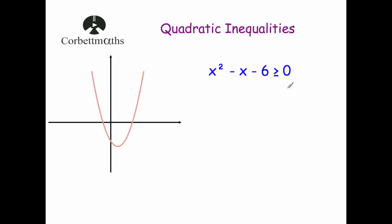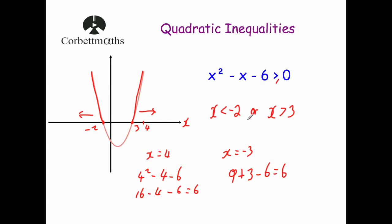If the inequality were greater than or equal to 0, it means the expression can equal 0 as well. We know the quadratic equals 0 at minus 2 and 3, so we add the equals signs. The solution would be: x is less than or equal to minus 2, or x is greater than or equal to 3.